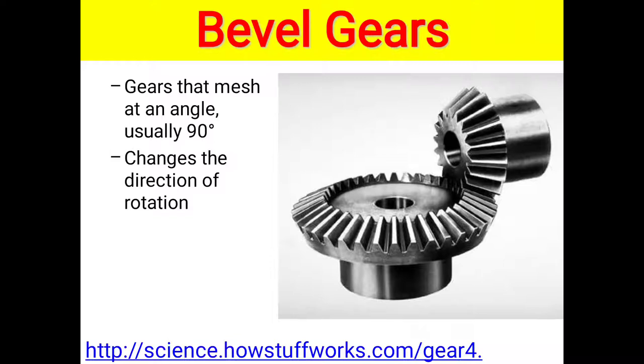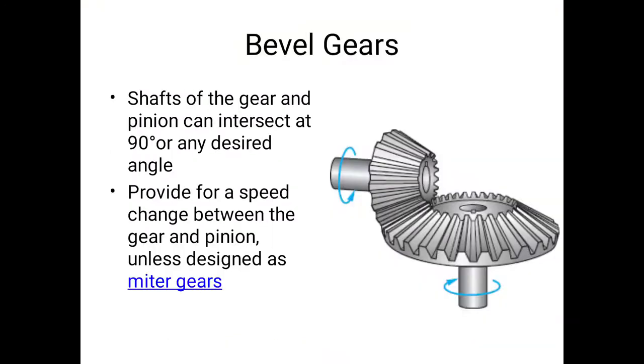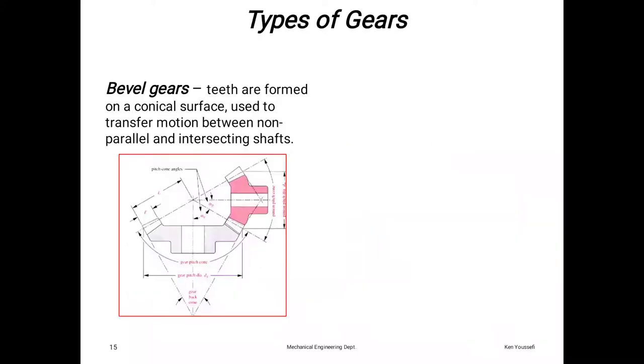Changes the direction of rotation—these are two functions of bevel gears. Bevel gears' shafts and pinions can intersect at 90 degrees or any desired angle, providing for speed changes between gear and pinion, unless designed as miter gears.